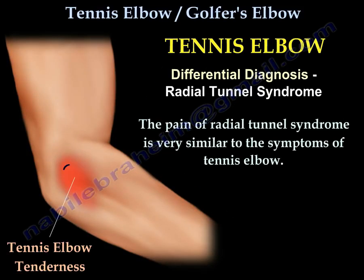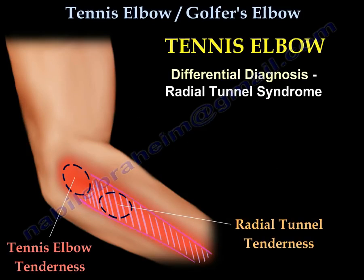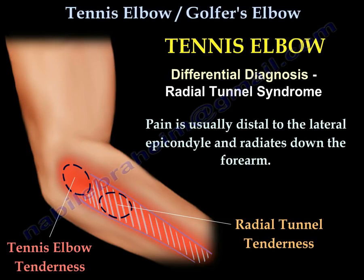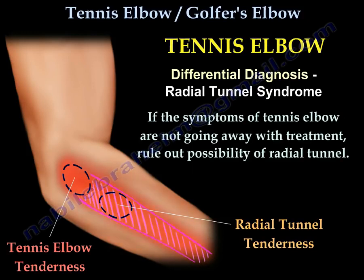Differential diagnosis: radial tunnel syndrome. The pain of radial tunnel syndrome is very similar to tennis elbow pain; however, the location of the pain is distal to the lateral epicondyle and it radiates down the forearm. If the symptoms of tennis elbow are not improving with treatment, rule out radial tunnel syndrome.